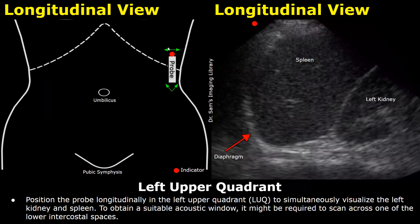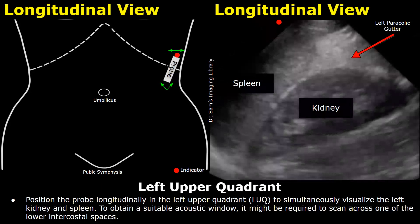Next, position the probe longitudinally in the left upper quadrant to view the left kidney and spleen, as well as the left hemidiaphragm and pleural space. You can scan across one of the lower intercostal spaces, or place the probe within the lower intercostal spaces for a better view and to remove rib shadows. You can place the probe in a one o'clock position. Fluid may be found between the spleen and the left kidney, and another important location is the left paracolic gutter, where fluid may also accumulate.